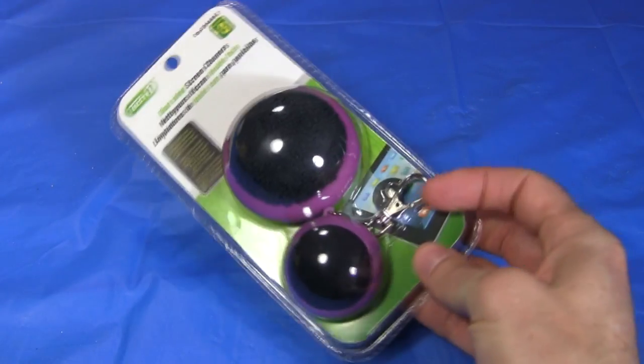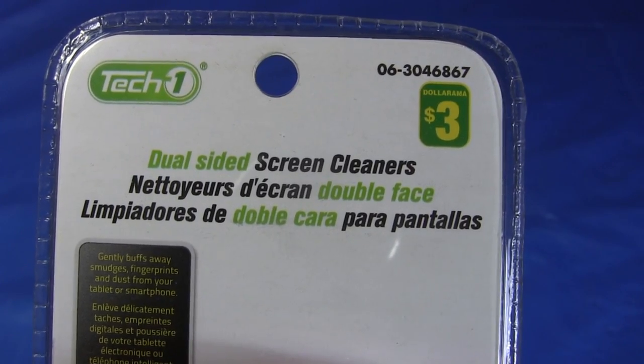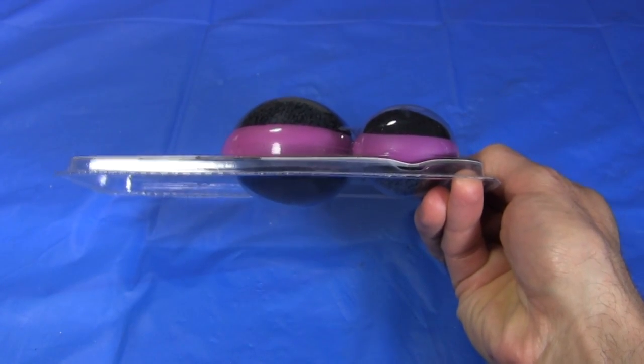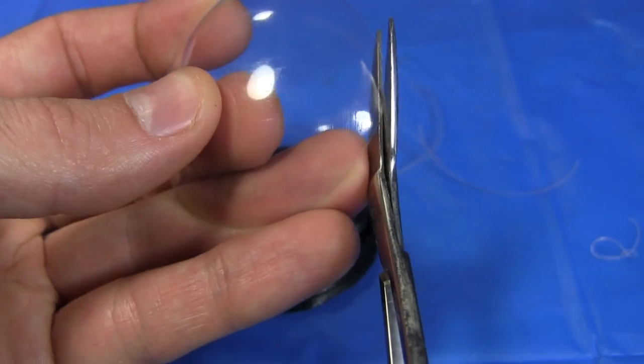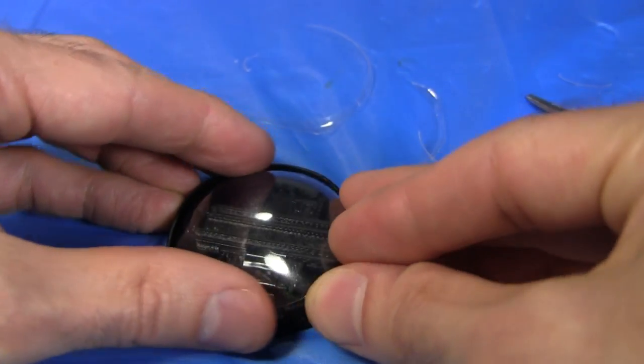But before going further, I decide to work on the transparent cover. I found this screen cleaning thing at a dollar store, and the packaging is around the right size, so I remove a bit of the packaging, and trim it a tiny bit at a time, while trying to fit it.